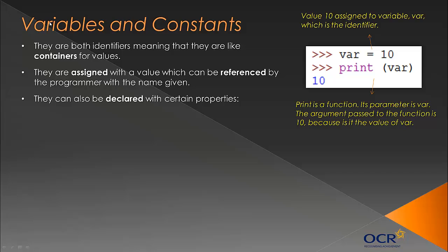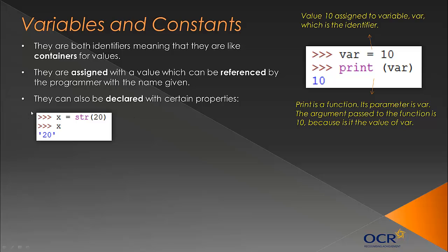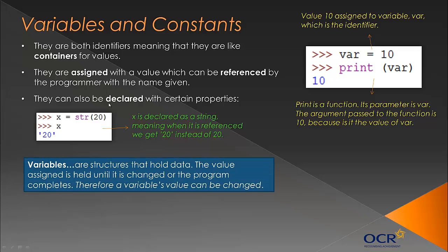Variables and constants can also be declared with certain properties. Declaration implies it's done right at the start, and this often happens. You can start off your code by just assigning it, but you can also declare it with certain properties. This is perhaps more obvious in different programming languages compared to Python - I'm using Python here as I've done in all the other videos. In this bit of code, we're declaring the variable x as a string, which is a type of data type.